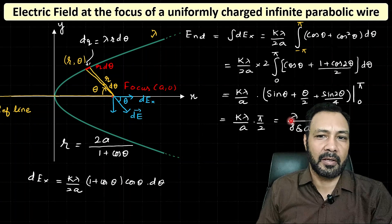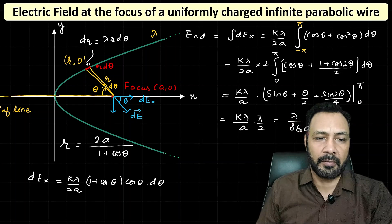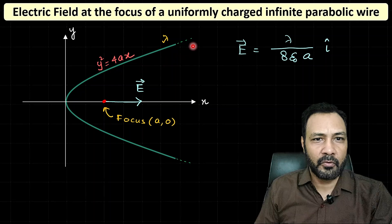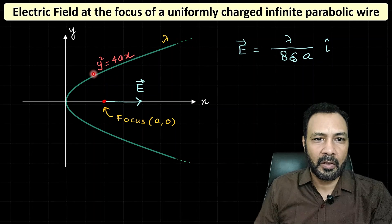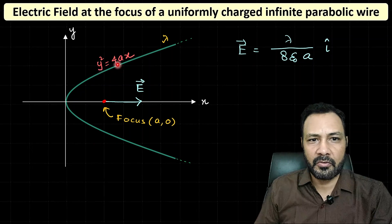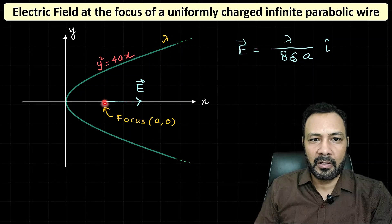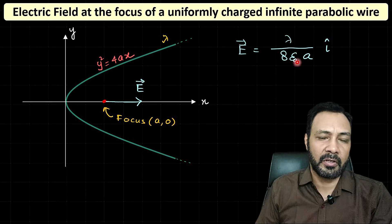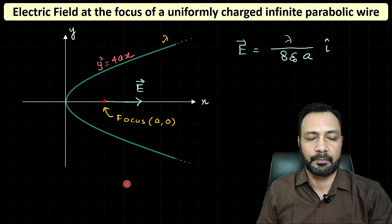Writing k = 1/(4πε₀), we get E_net = λ/(8ε₀a). Therefore, the electric field at the focus of the parabolic wire y² = 4ax with linear charge density λ is E = λ/(8ε₀a) î. That is the required expression.